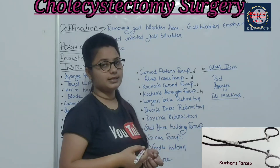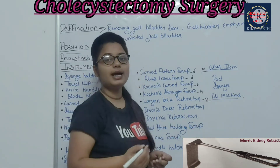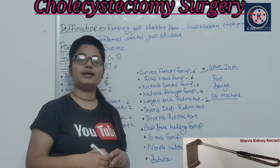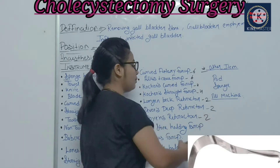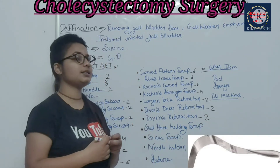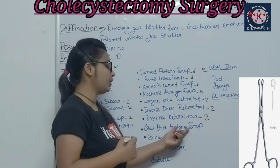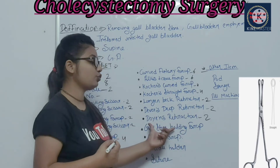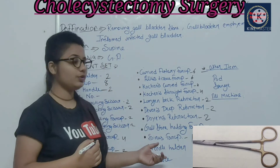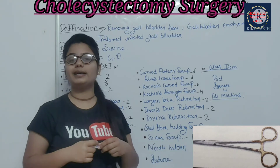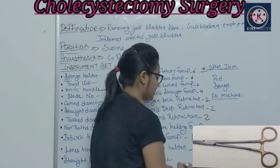Straight forceps should also be kept — 4 of each. For retractors, keep Langenbeck retractors or prone retractors, 2 of them. After skin incision and internal layer dissection, use the Langenbeck retractor to retract. Doyen's retractors should also be kept — 2 — as they are used in abdominal surgery. A gallbladder holding forceps is a common instrument for cholecystectomy surgery, used to hold the gallbladder. You also have sinus forceps and a needle holder.